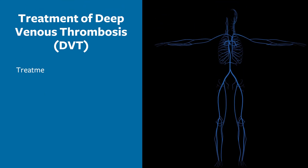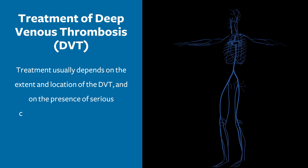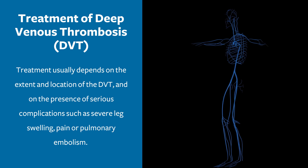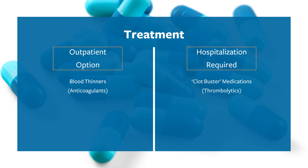The treatment usually depends on the extent and location of DVT and on the presence of serious complications, such as severe leg swelling, pain, or pulmonary embolism. Most DVT can be treated on an outpatient basis with subcutaneous or oral blood thinners, called anticoagulants. The most serious conditions would, however, require hospitalization and removal of the clot with clot buster medications or thrombolytics and mechanical clot removal devices.